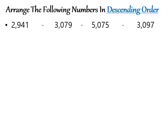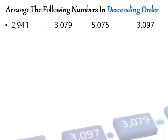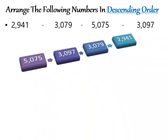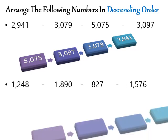Arrange the following numbers in descending order — decreasing order, starting from the biggest to the smallest. The biggest of all four numbers is 5075, then comes 3097, then 3079, and the smallest is 2941. This is the arrangement you see when you click on the screen, and there is another example for you to solve.